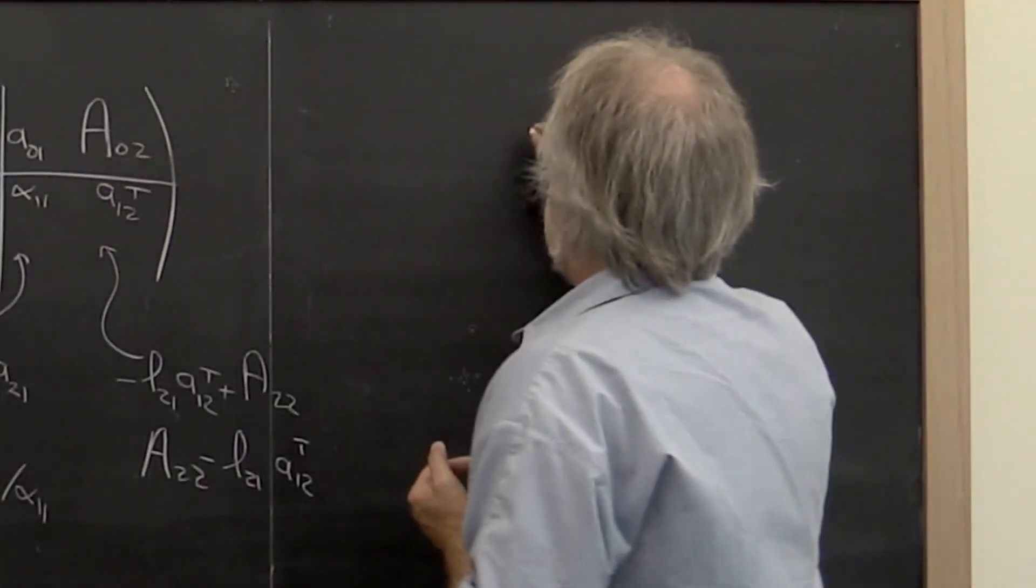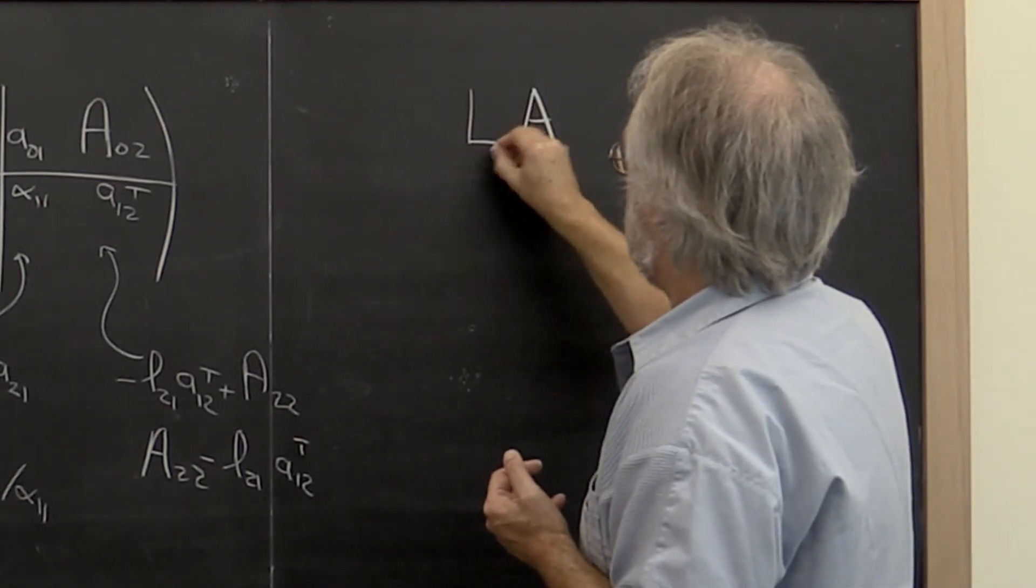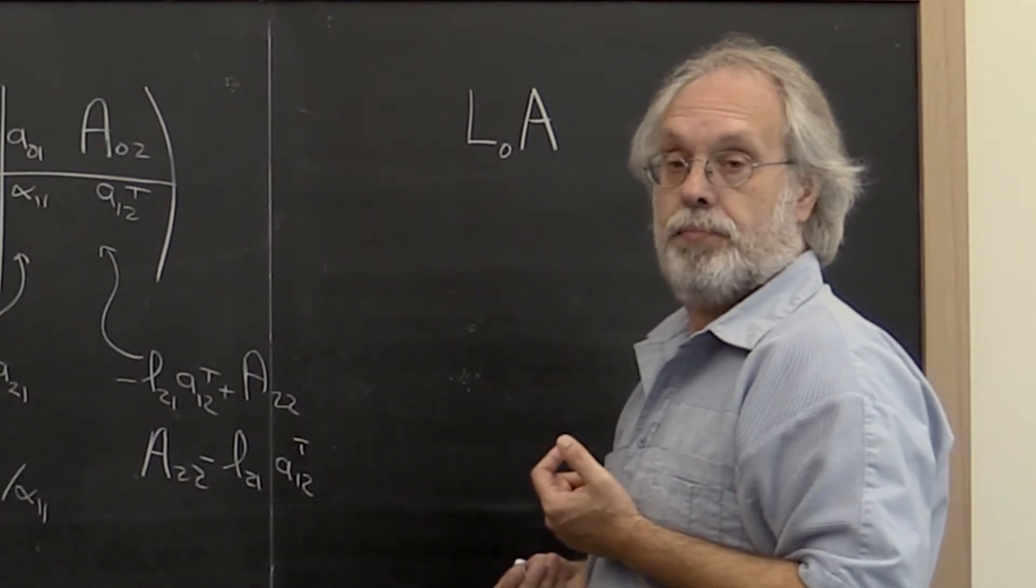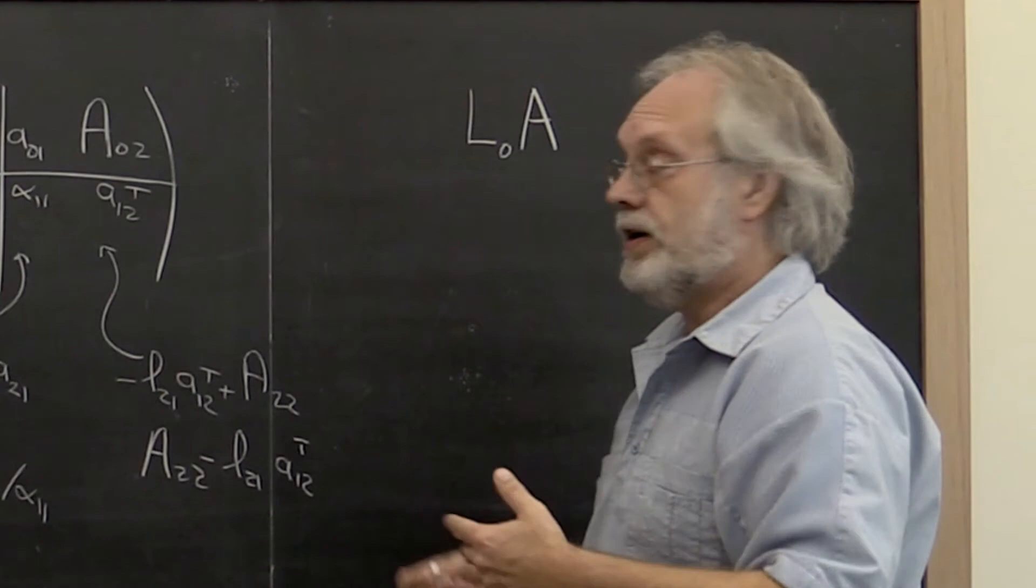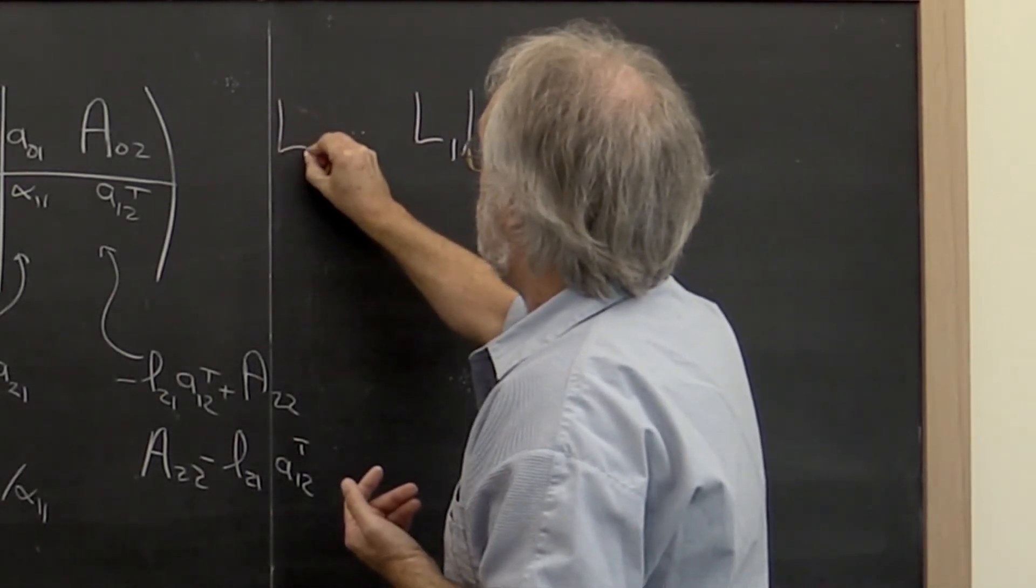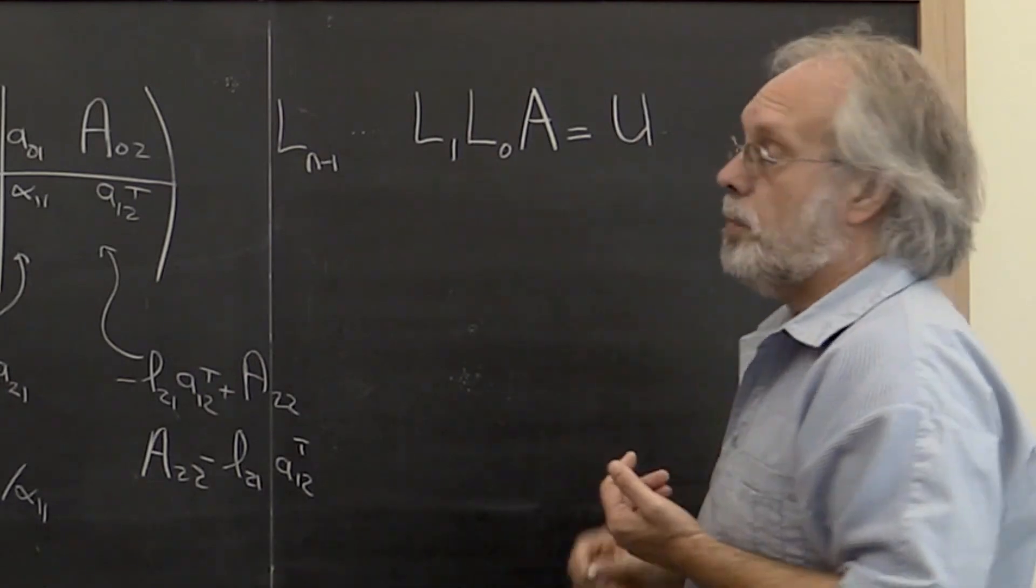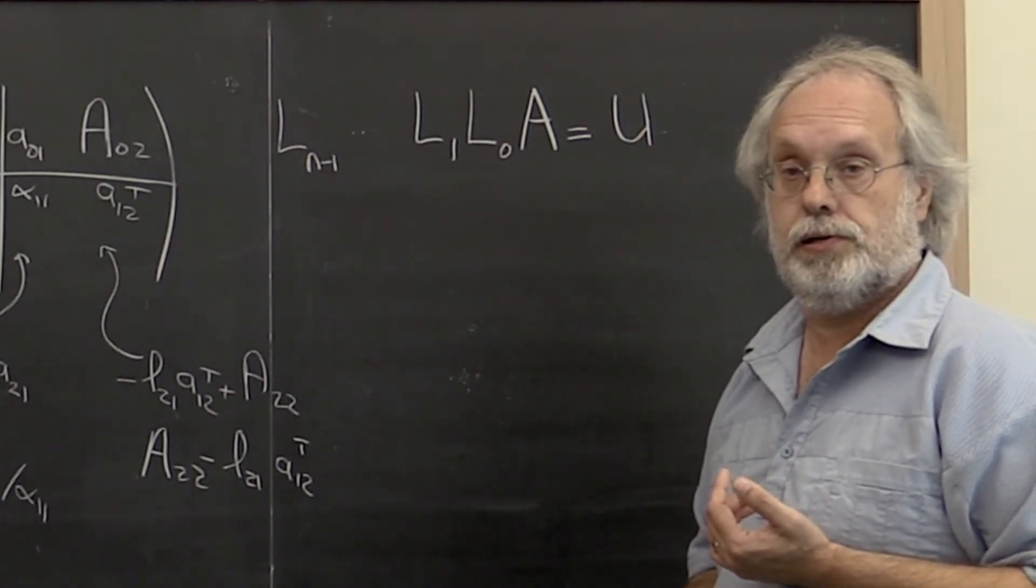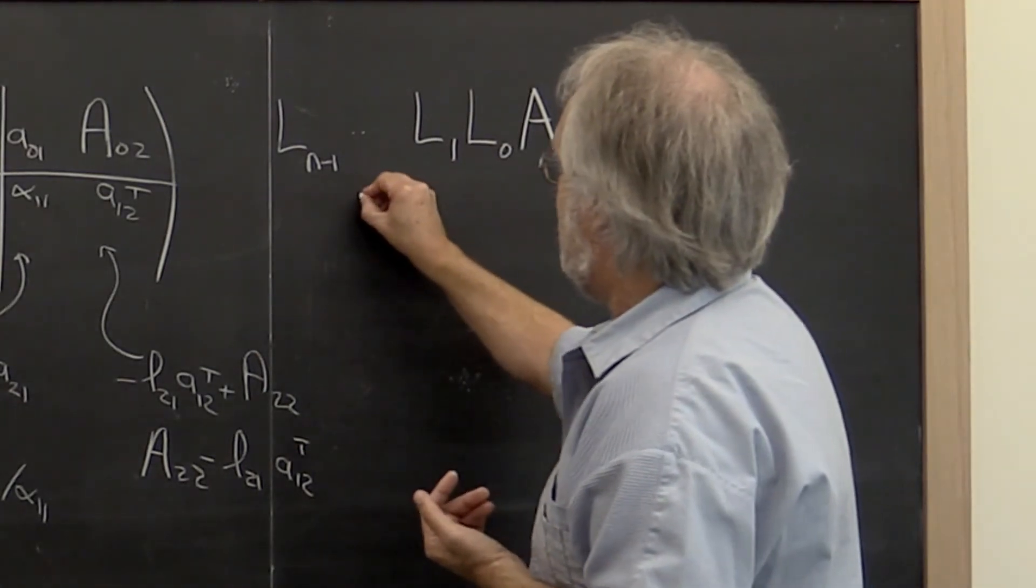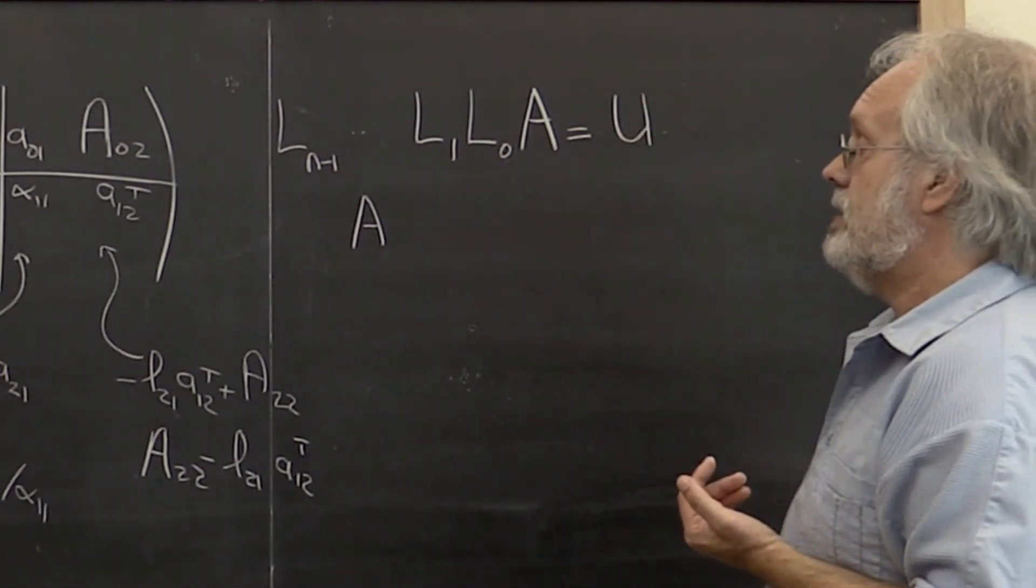What that means is that if you take your matrix A and you compute your first Gauss transform, the one corresponding to the first step of Gaussian elimination or of LU factorization, and then you apply another one and you do that until you get down to Ln minus 1, then the result of that is our upper triangular matrix.